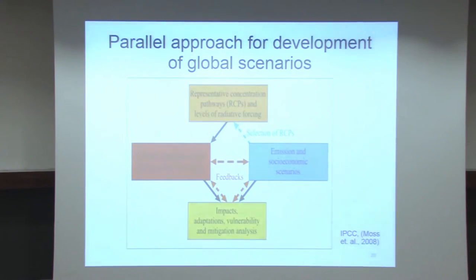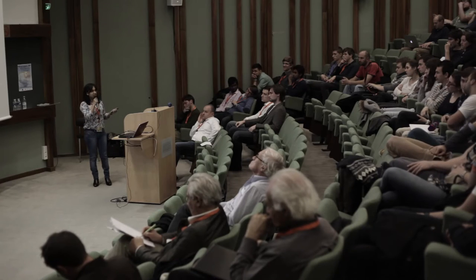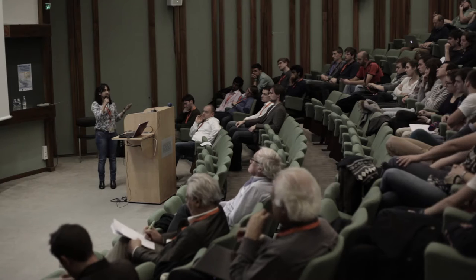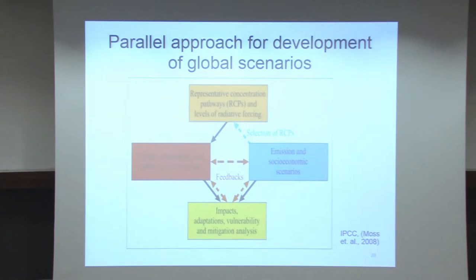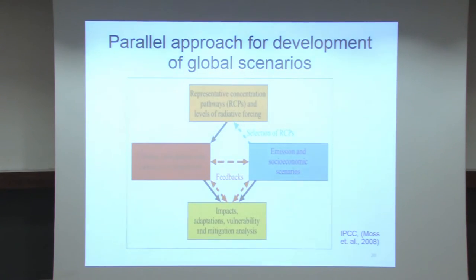Using all these scenarios, what the IPCC group does is develop four separate models known as Representative Concentration Pathways, or RCPs, which take into account radiative forcing. These models depend on different scenarios for adaptation and mitigation, taking into account different socio-economic situations, emissions, and global climate and atmospheric conditions. With this feedback system, they develop separate concentration models.